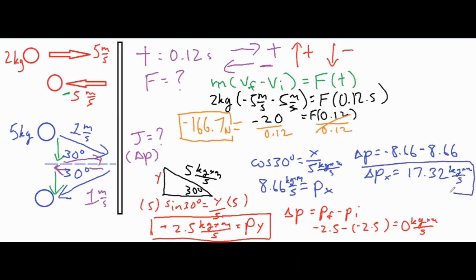With bouncing there is always a bigger change in momentum, because the wall has to first decrease the momentum to zero and then push it back out in the opposite direction, contributing an additional 8.66 — basically doubling the value for delta-p. I hope that helps you analyze and calculate both one-dimensional and two-dimensional collisions with a wall involving bouncing and direction changes. Thank you for watching.